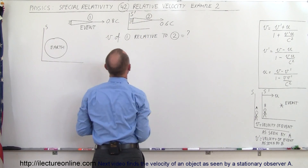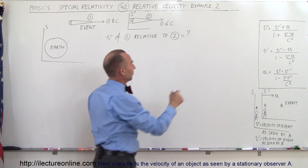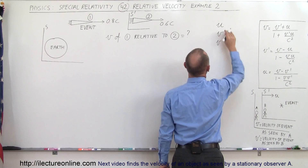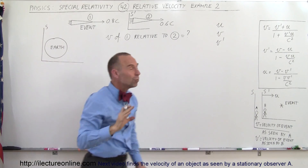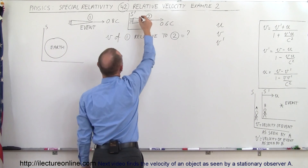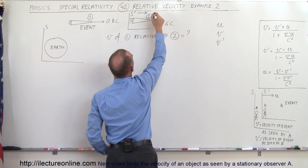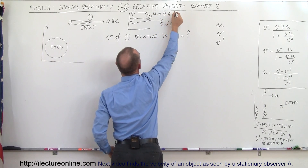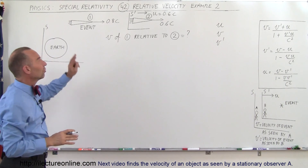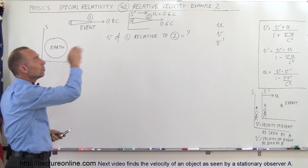Let's call Spaceship 2 the moving reference frame, S'. Now we define U, V, and V'. U is the velocity of the moving reference frame S' relative to the stationary reference frame. That would be the velocity of Spaceship 2, which is equal to 0.6C, because that spaceship is moving at 0.6C relative to the Earth.